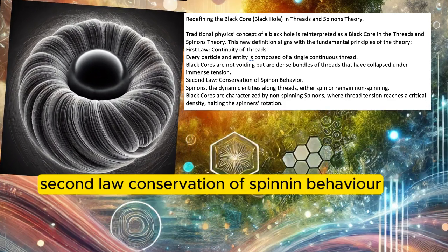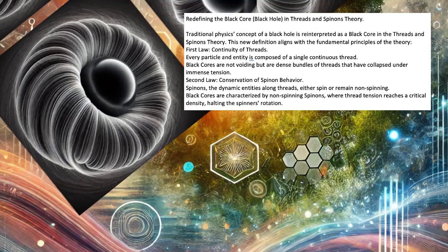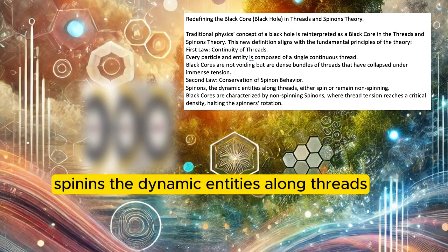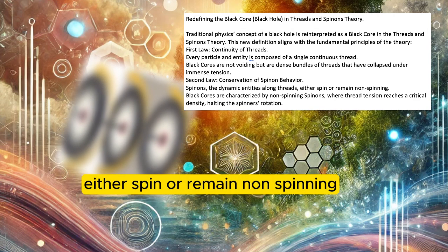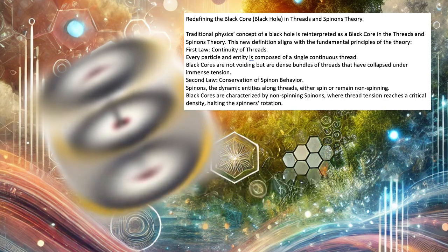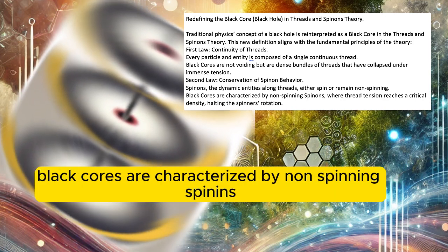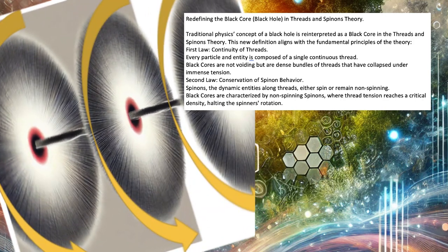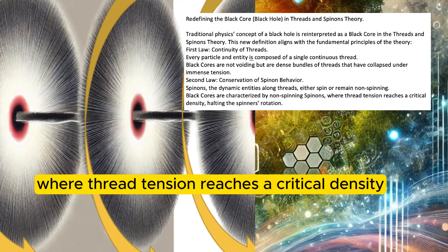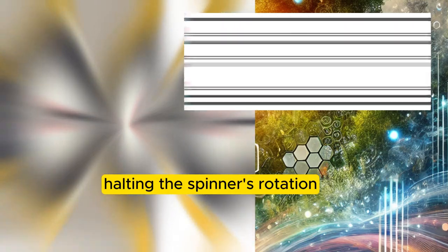Second law: conservation of spin-in behavior. Spin-ins, the dynamic entities along threads, either spin or remain non-spinning. Black cores are characterized by non-spinning spin-ins where thread tension reaches a critical density, halting the spinner's rotation.